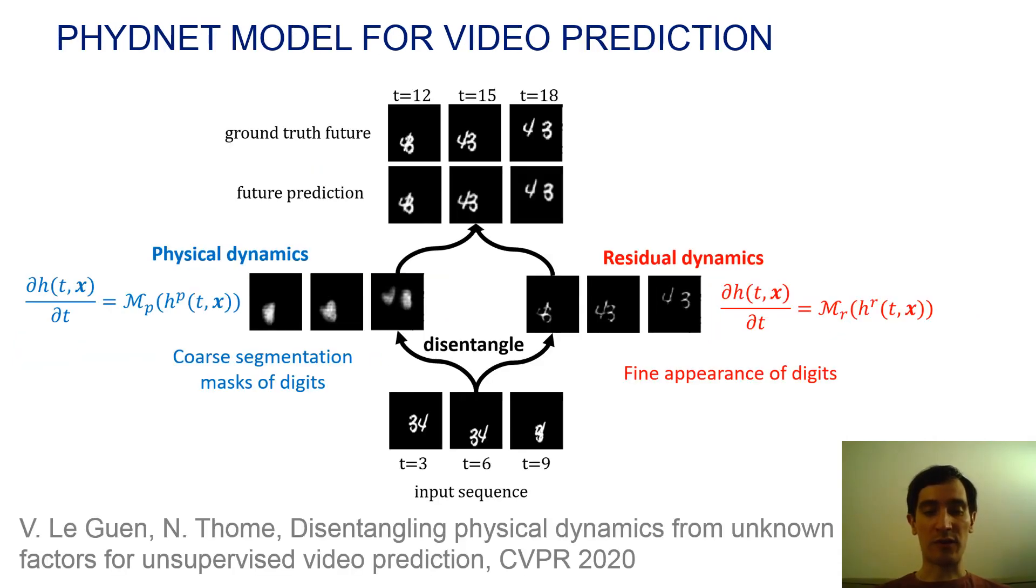Our model for solar energy forecasting is based on a deep video prediction model that incorporates physical knowledge. We presented this PhyDNet model at the CVPR conference. The main idea is to leverage physical dynamics with learned partial differential equations.